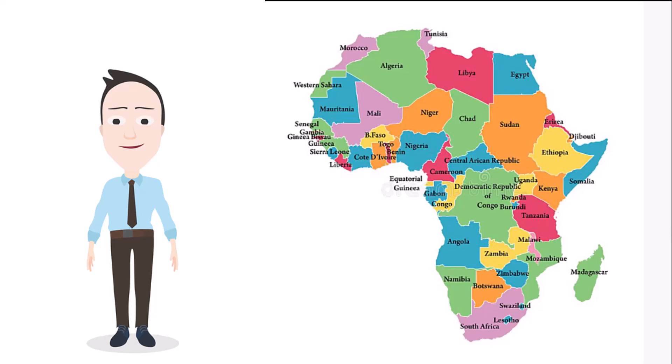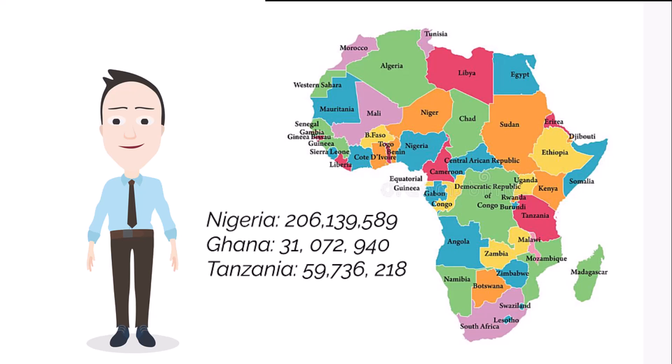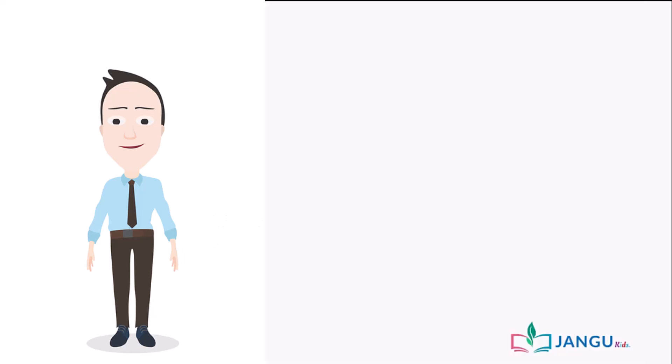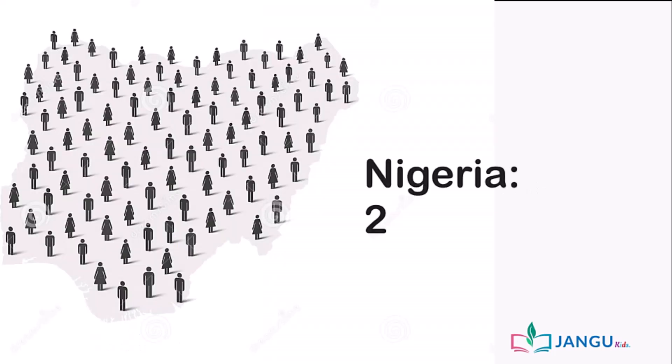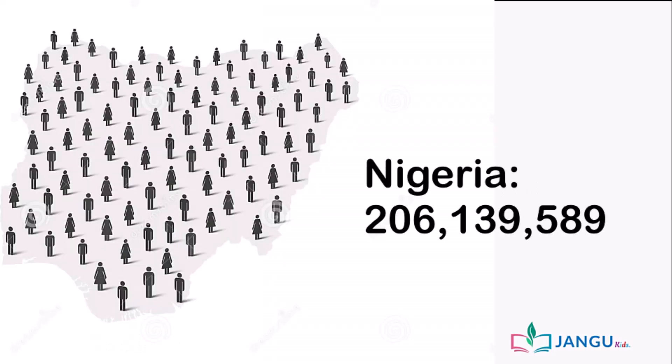Can you read and write the population of these countries in words? Excellent — give it a try first. Remember, let's have our place value chart and place these numbers appropriately. Done? Good. Now let's try to read and write Nigeria's population. We have two hundred and six million, one hundred and thirty-six thousand, nine hundred and eighty-nine people.